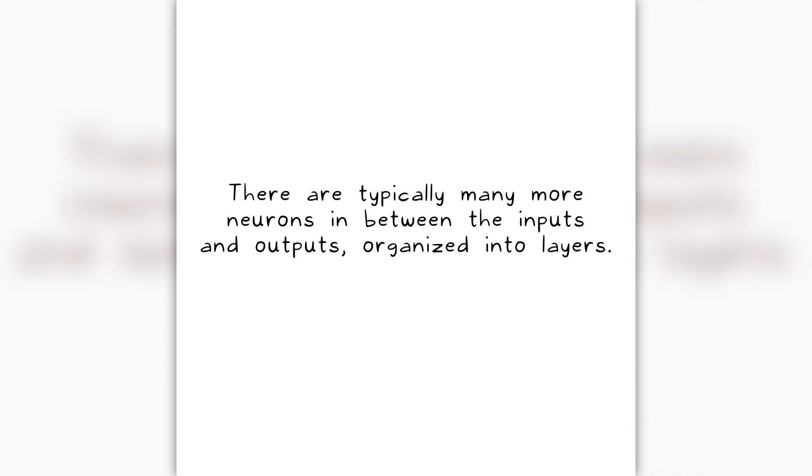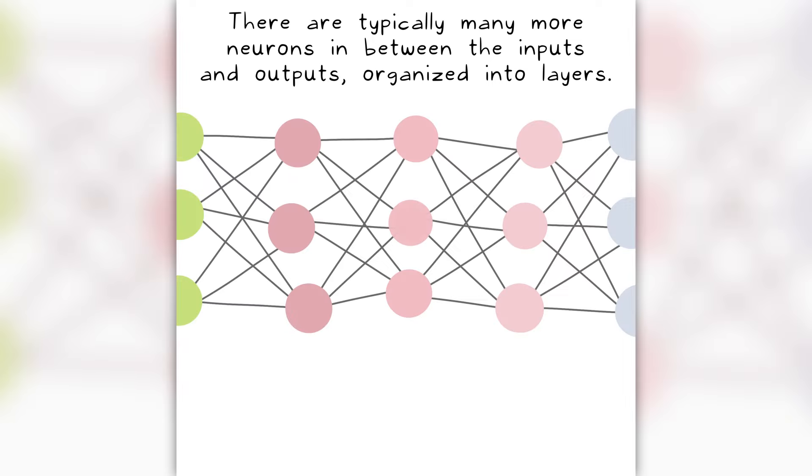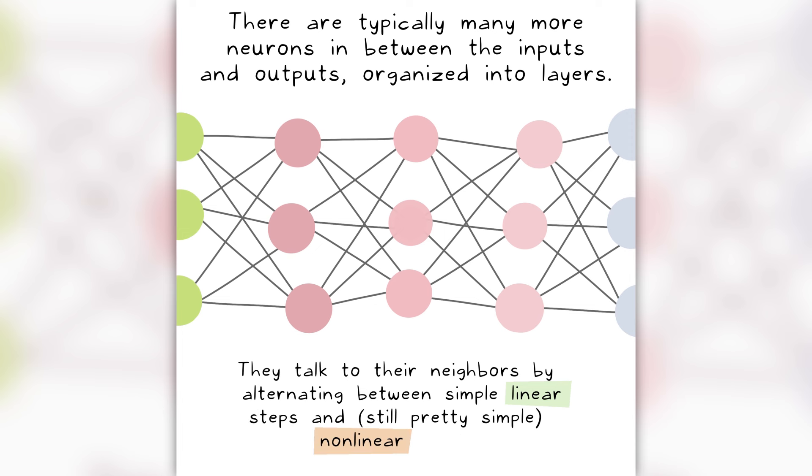There are typically many more neurons in between the inputs and outputs, organized into layers. They talk to their neighbors by alternating between simple linear steps and still pretty simple non-linear steps.